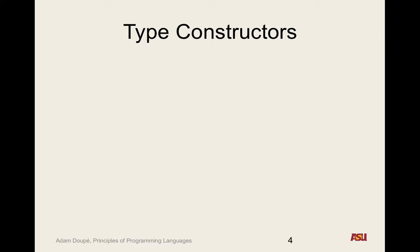We're talking about type systems — how does a language designer define what types of operations are valid and what types are valid. We talked about the four things necessary for a type system. The first is basic types, right? Otherwise you can't build any other types on top of that.